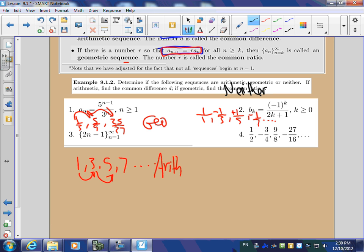How about this one? 1 half minus 3 fourths plus 9 eighths minus 27 sixteenths. What are we doing in the top? We're multiplying by 3. What are we doing in the bottom? By negative 2. But we are multiplying by that negative 3 halves each time. So is that arithmetic, geometric, or neither? That's geo, isn't it? Because it's times negative 3 halves. Times negative 3 halves. Times negative 3 halves. So this one's definitely going to be geo.